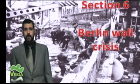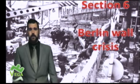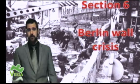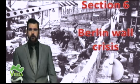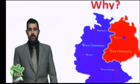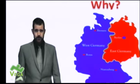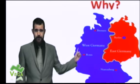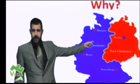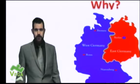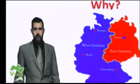Welcome to this video for International Relations, Paper 1. It's Section 6, the Berlin Wall Crisis, one of the first key topics on this paper. It all starts by looking at a map of Germany — Berlin is located in East Germany, which is Soviet-controlled.